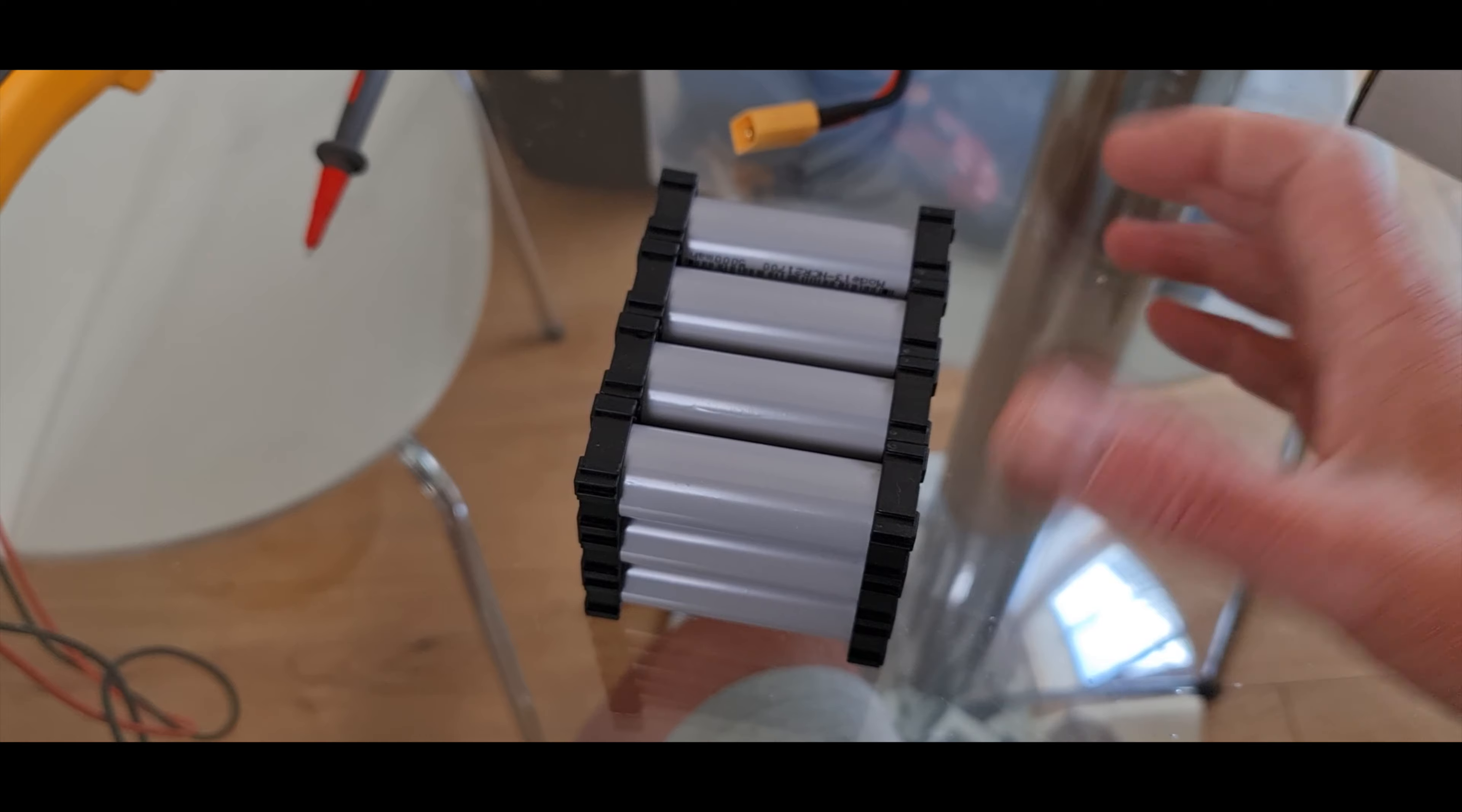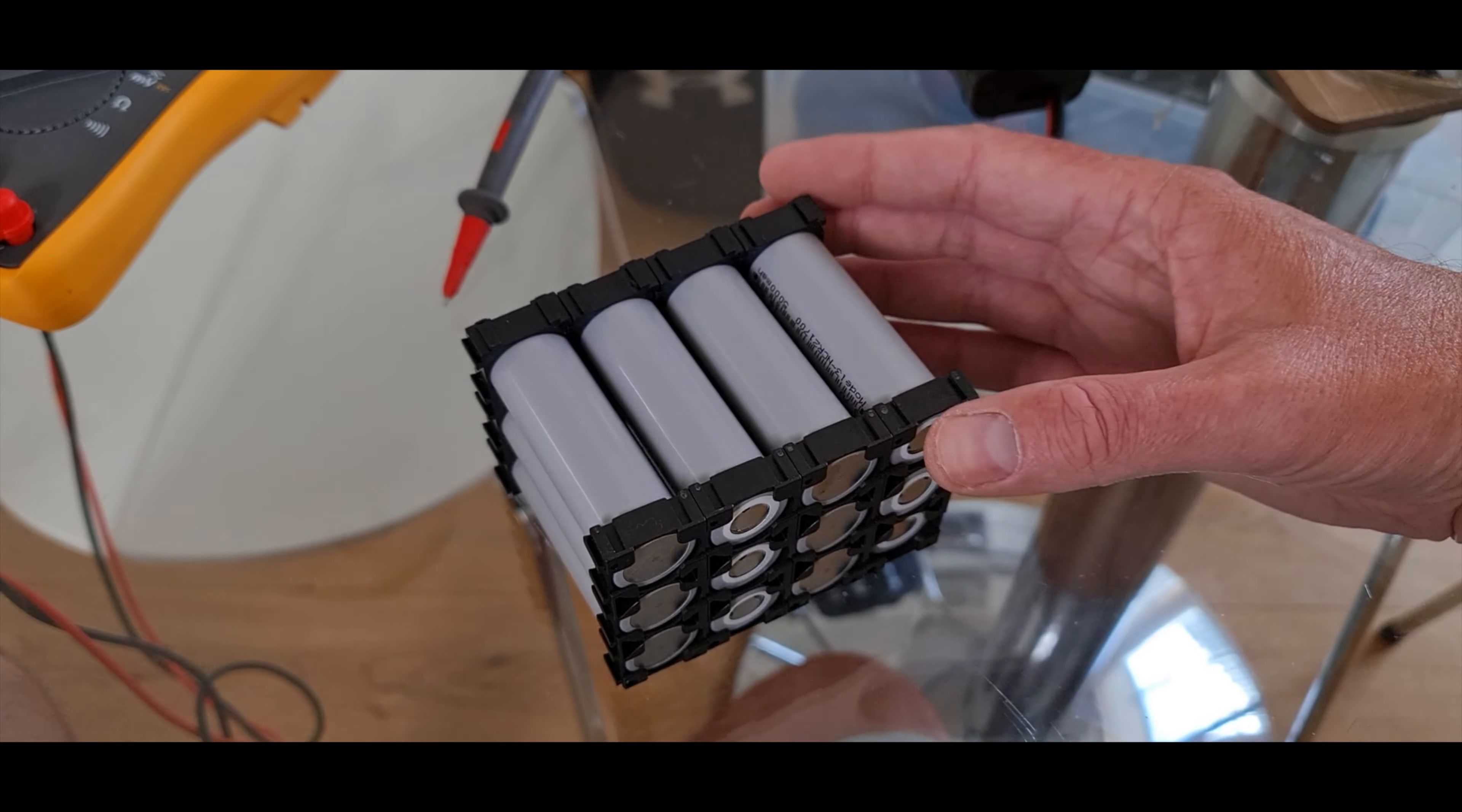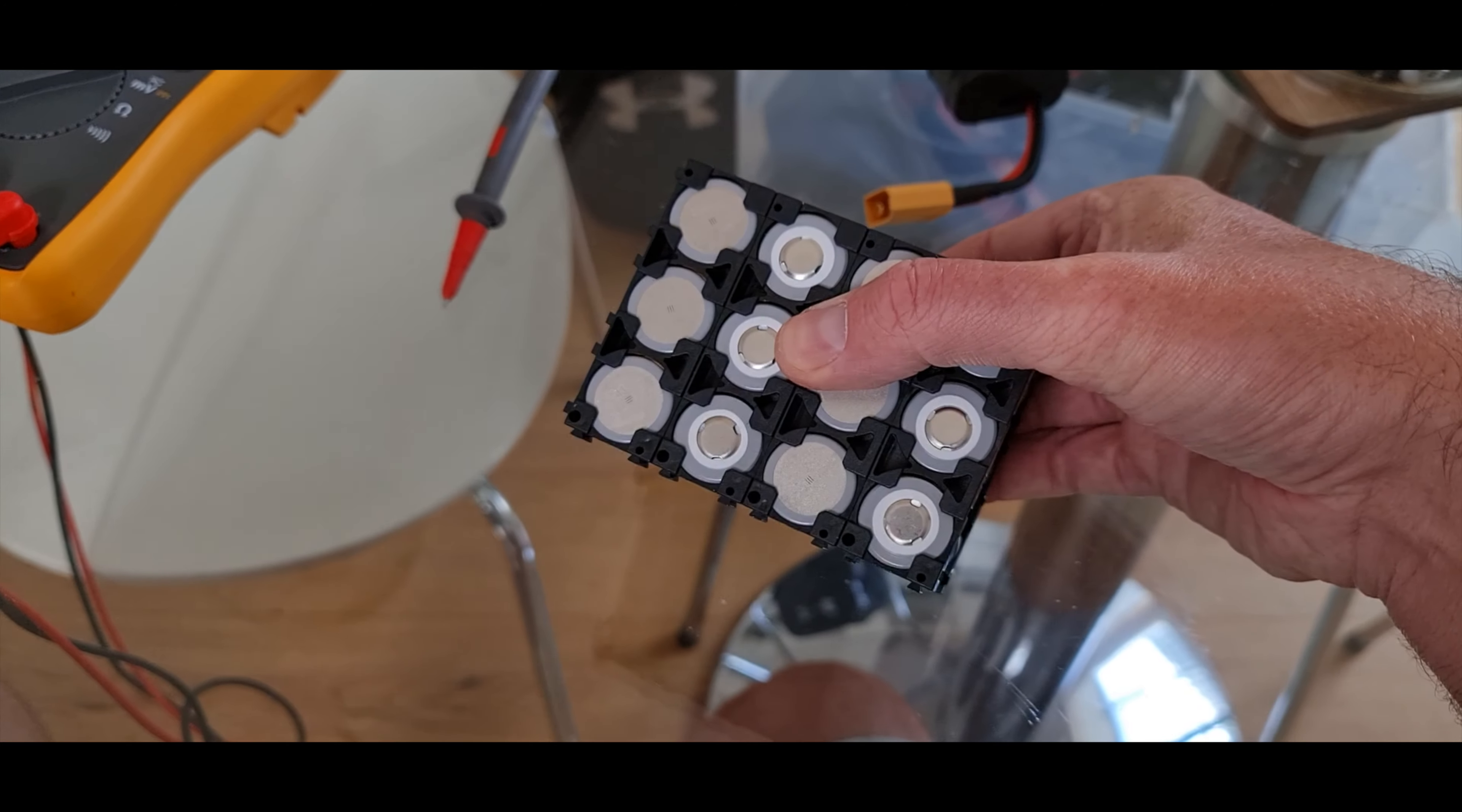You could do this beforehand before you start getting to this stage, or you could just do it like I do - put them all together and just make sure. What you're looking for is any cells that are really low on voltage or any ones that just stand out as being different. If you get them from a reliable supply then they will all be within a couple of millivolts of each other. If not, move that one aside and put a new one in, because if it's lower than usual then the chances are it might have some self-discharge and that's not good. You don't want that, it will drag the rest of the pack down.